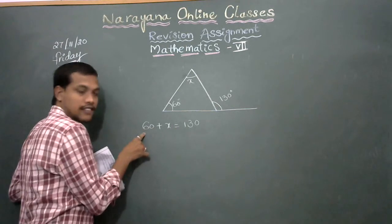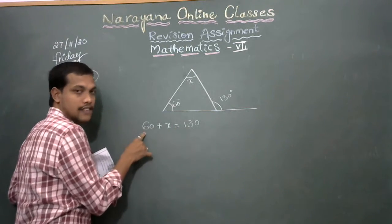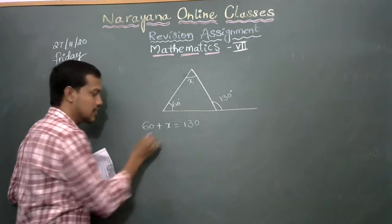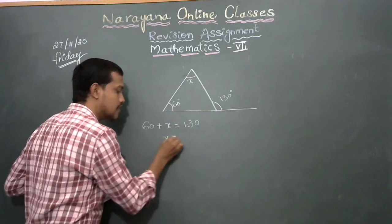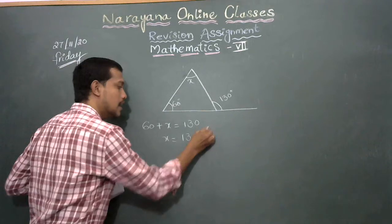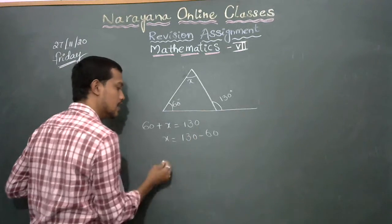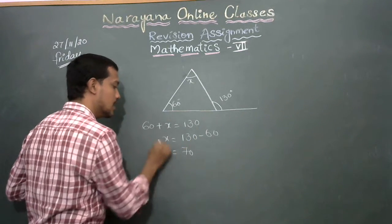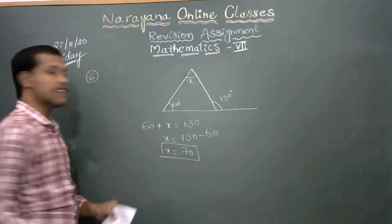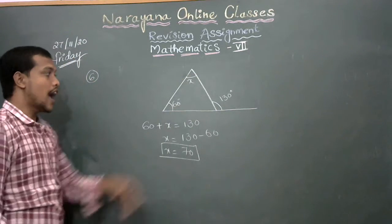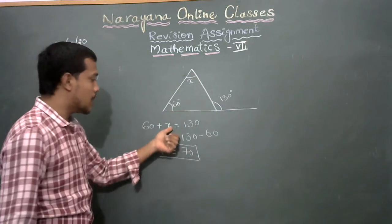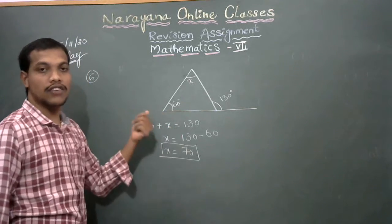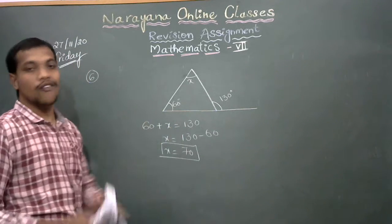So, the sum of the two interior angles equals the exterior angle: 60 plus x equals 130. Bringing 60 to the right-hand side gives x equals 130 minus 60, so x equals 70. If we substitute x as 70, then 60 plus 70 equals 130.